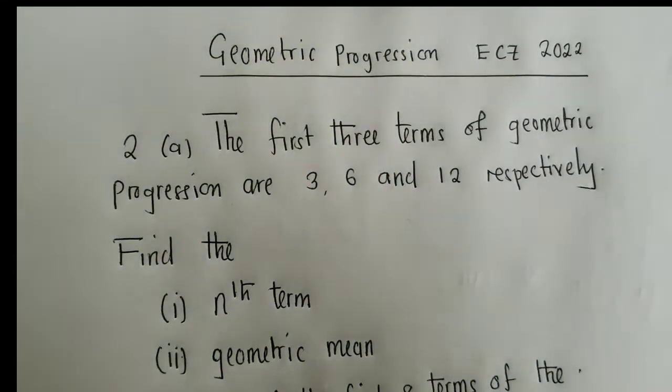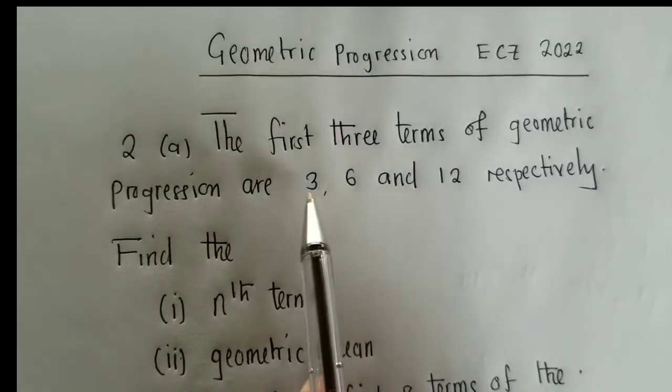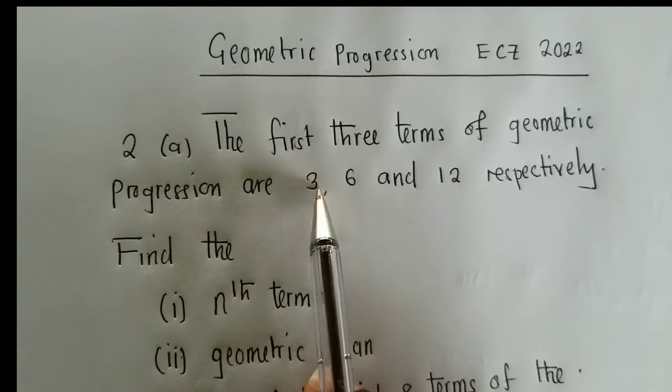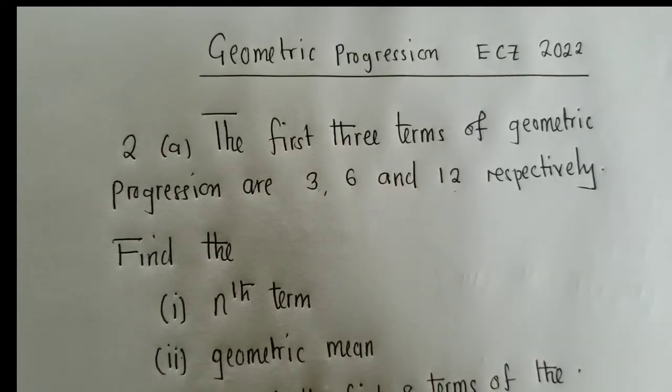So how do we find the nth term? We've been given the sequence here. We have 3, 6, and 12. So now how do we find the nth term?